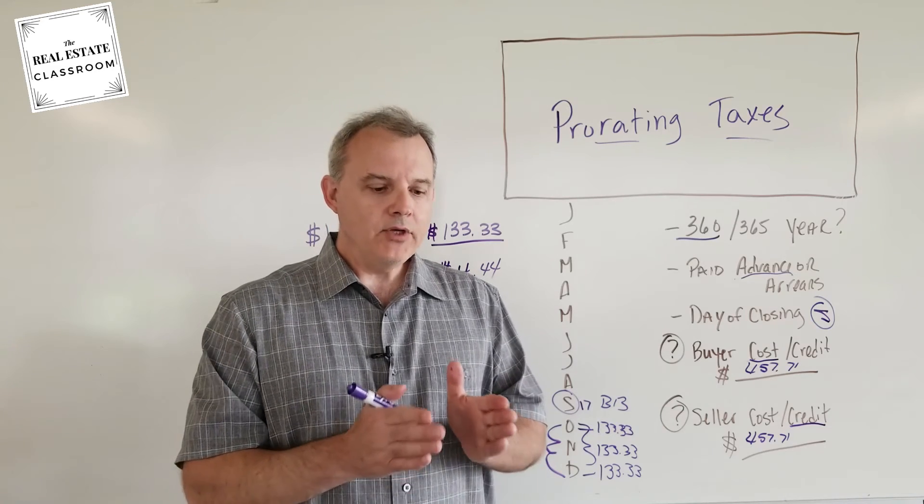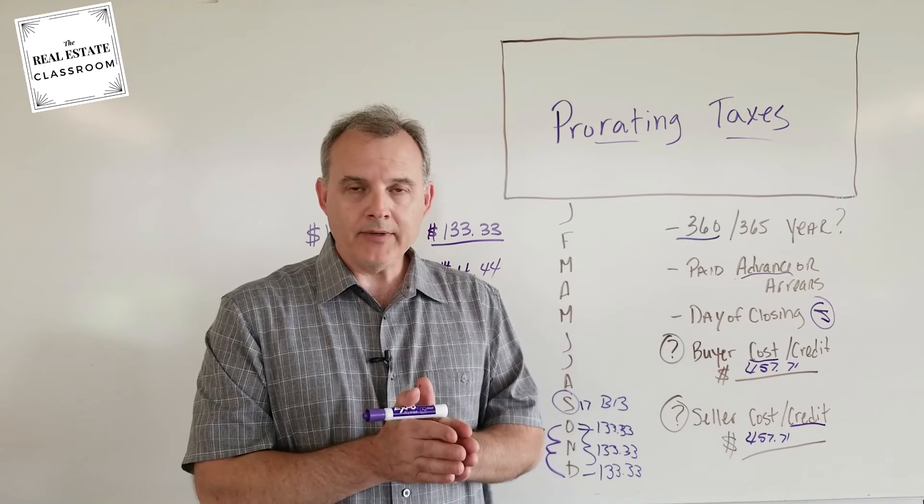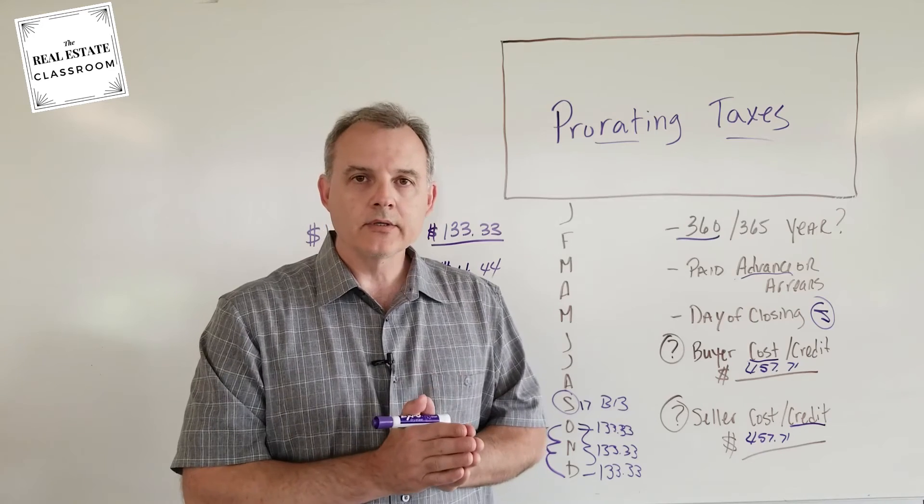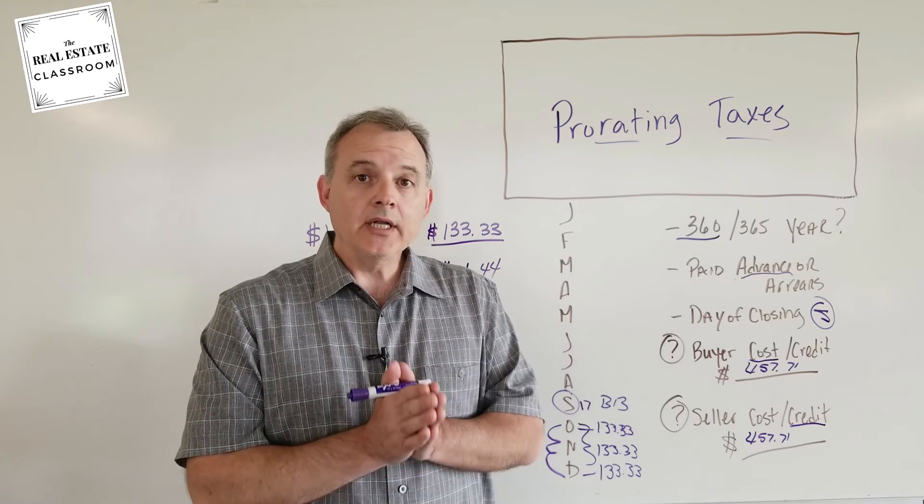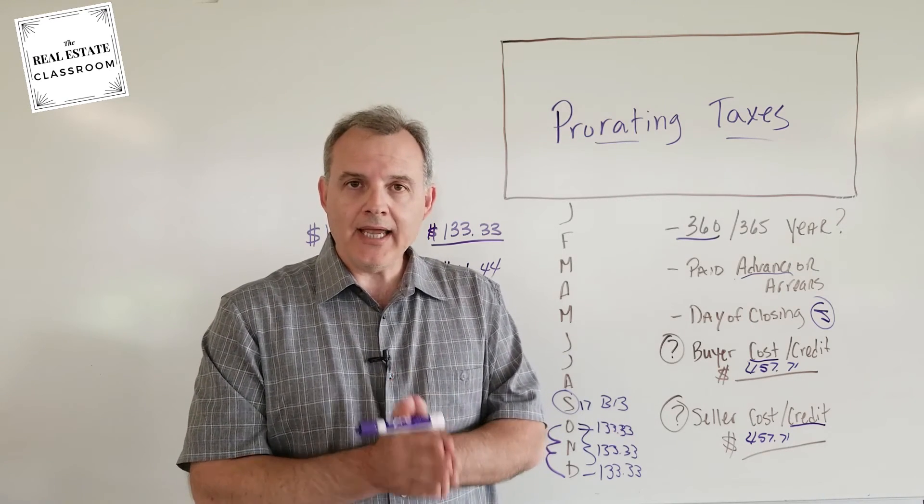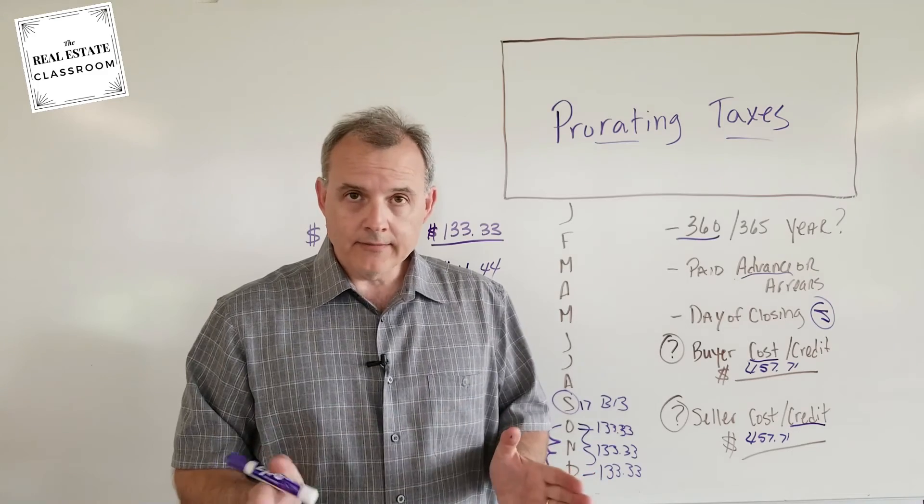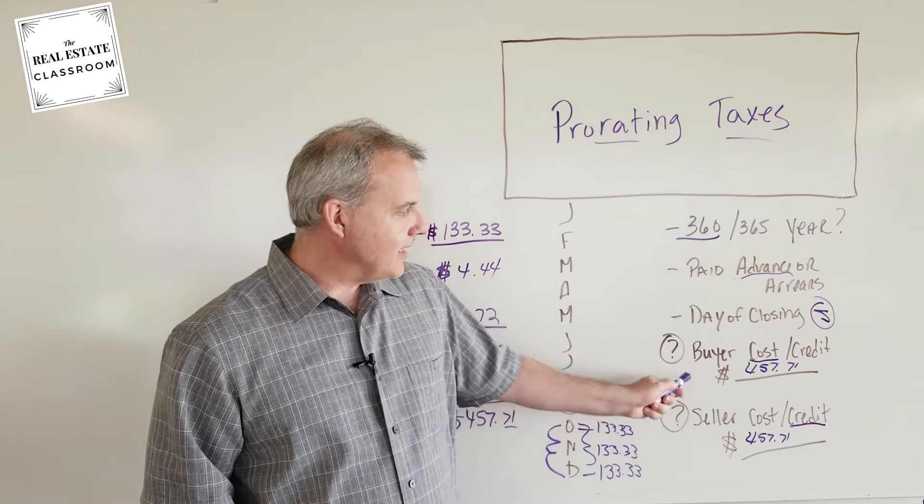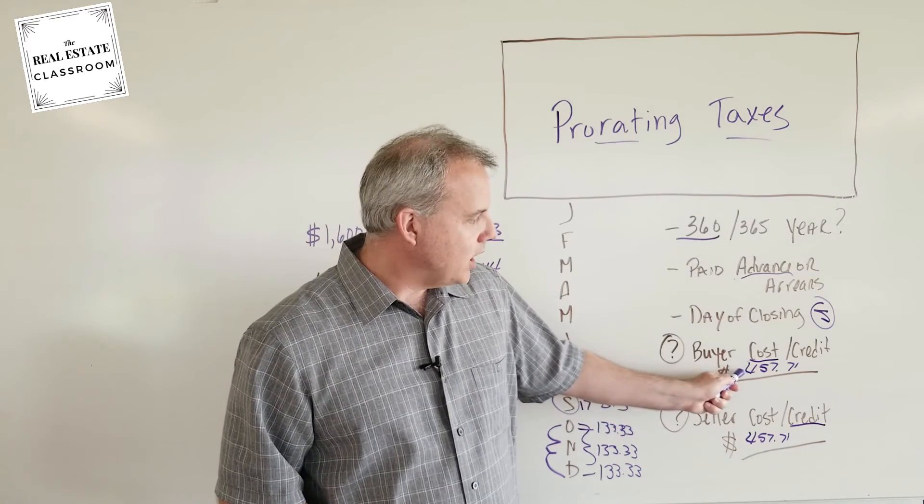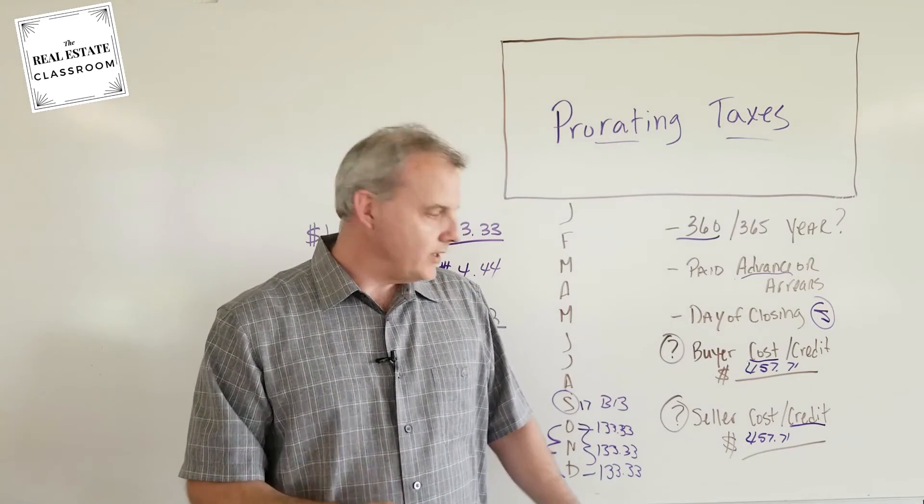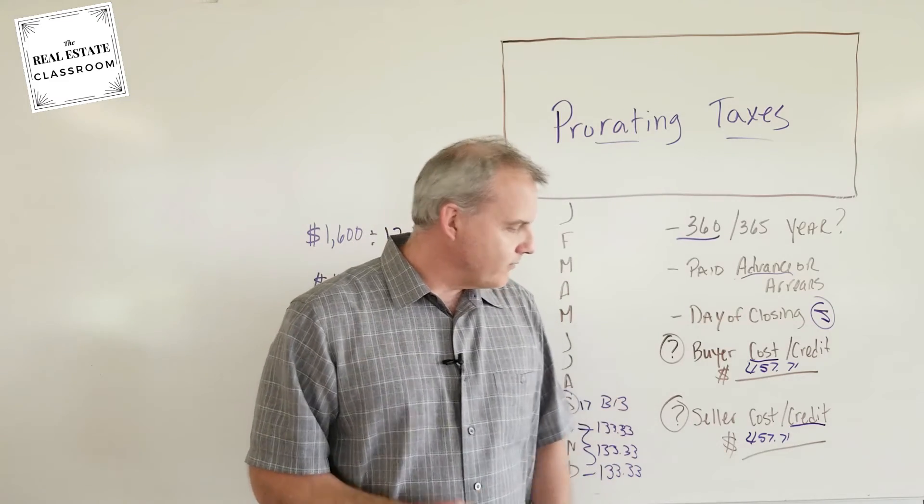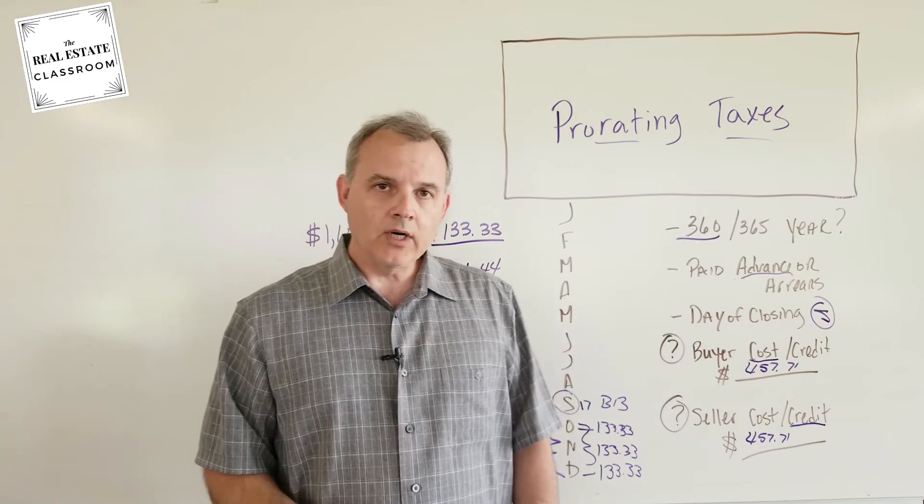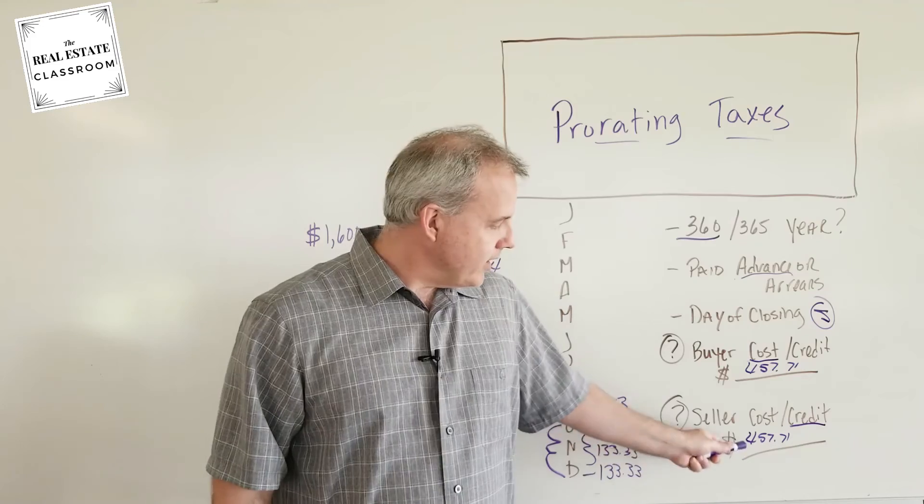One thing I want to point out here, anytime you are doing a proration problem involving rents or taxes, a lot of times you can eliminate a couple potential answers right away. Notice that these two numeric values are the same. So in this case, the buyer cost was $457.71, and the seller credit was $457.71. It's the same numeric value.